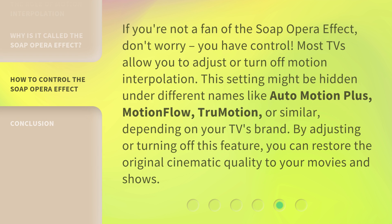If you're not a fan of the soap opera effect, don't worry — you have control. Most TVs allow you to adjust or turn off motion interpolation. This setting might be hidden under different names like Auto Motion Plus, Motion Flow, True Motion, or similar, depending on your TV's brand. By adjusting or turning off this feature, you can restore the original cinematic quality to your movies and shows.